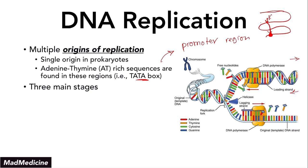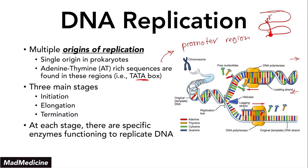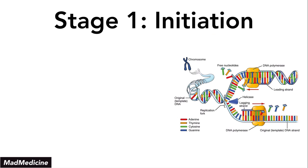There are three main stages to DNA replication. The first stage is the initiation stage. Then you move on to the elongation stage. And finally, the termination stage. At each stage, you have very specific enzymes that function and play a very important role in replicating DNA.